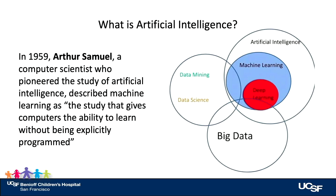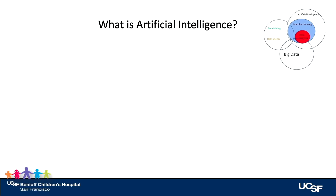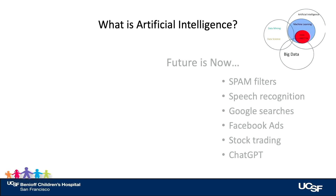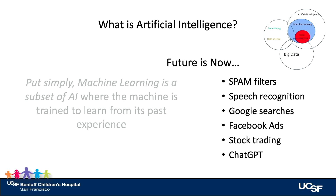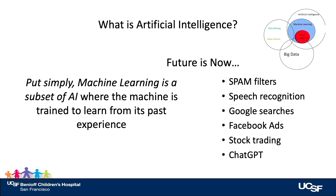In 1959, Arthur Samuel, who was a computer scientist who pioneered the study of artificial intelligence, described machine learning as the study that gives computers the ability to learn without being explicitly programmed. We're actually living with this already every day with spam filters and speech recognition, Google searches, ChatGPT, et cetera. To simplify: machine learning is a subset of AI where the machine is trained to learn from its past experience.